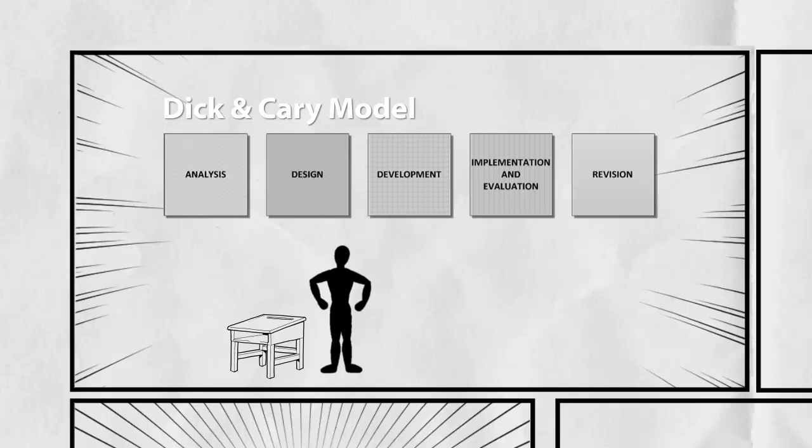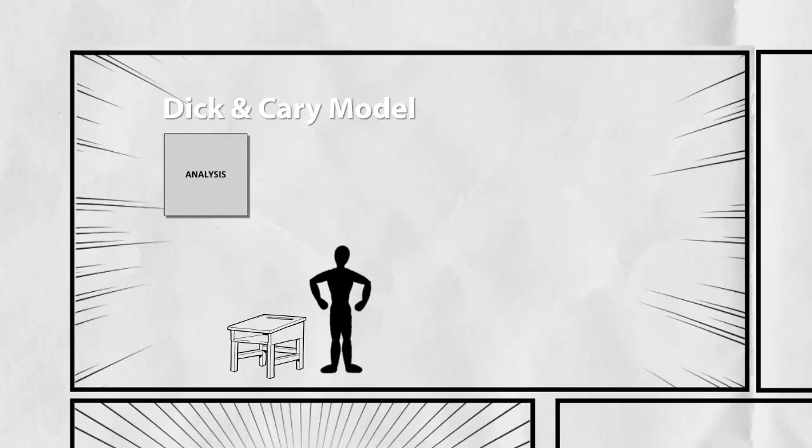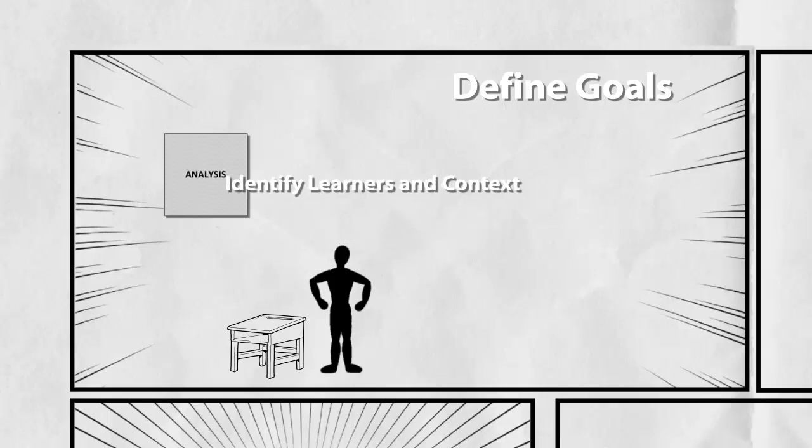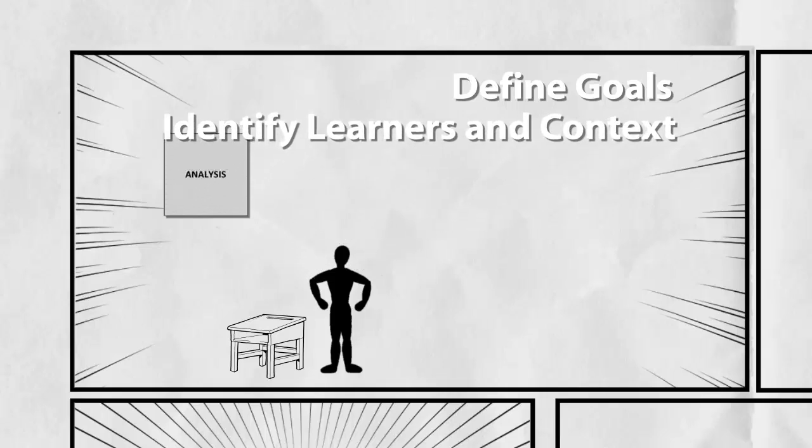Let's see if that model can help us by starting with this first phase of the model, the analysis phase. Front-end analysis is that part of the process where we look to define our goals, look at our learners and the context in which learning will take place, and look at the tasks that will be involved in the learning. These three pieces make up the analysis phase.